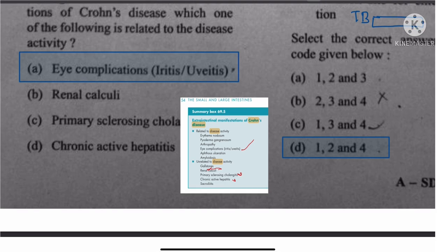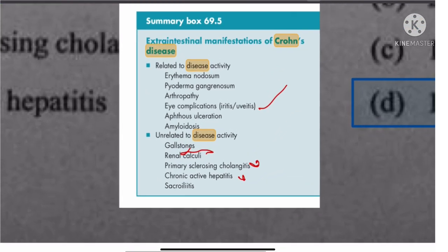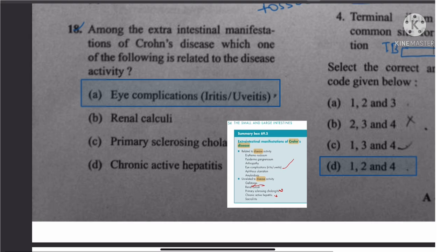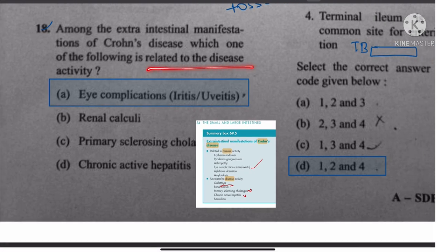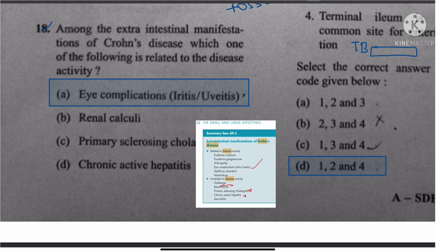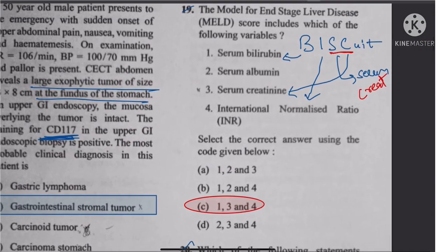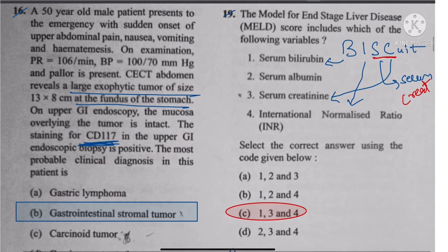Question 18: Among extra-intestinal manifestations of Crohn's disease, the question asks what is related to disease activity. The option with eye complications — iritis and uveitis — is the answer. The other three options are unrelated to disease activity.